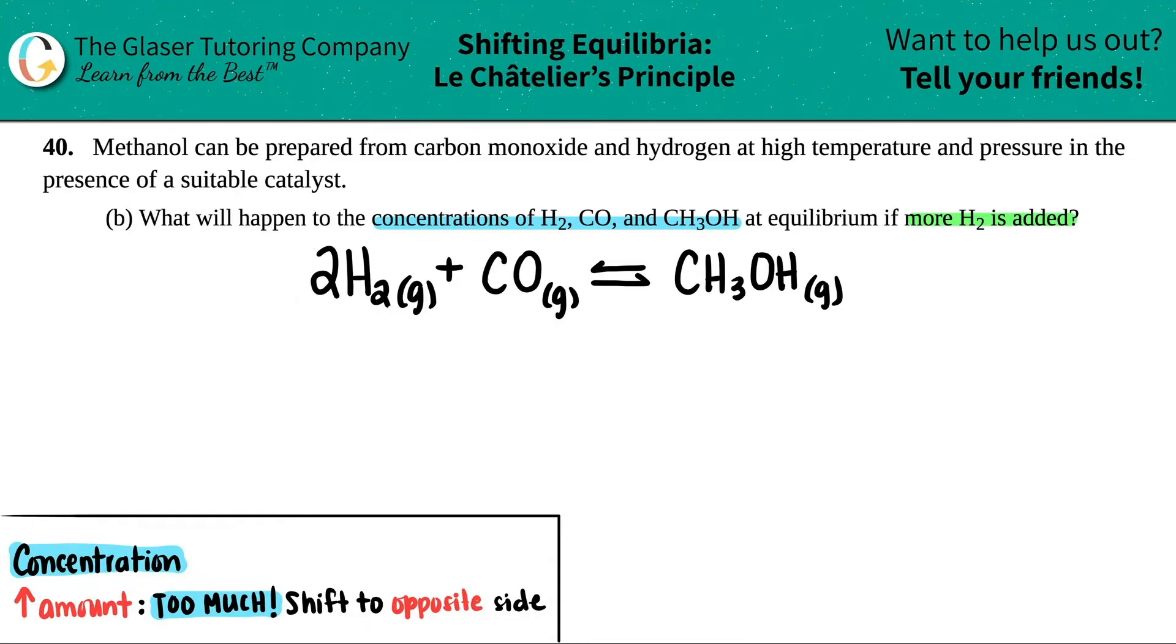In this case, what are we specifically doing? We're adding more of H2. So this is a concentration type of question where we can use Le Chatelier's principle to know what's going to happen to the equilibrium if you increase an amount of something in the balanced equation.